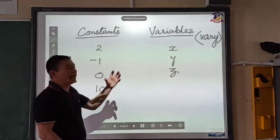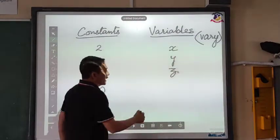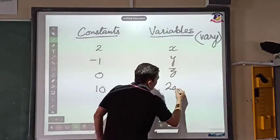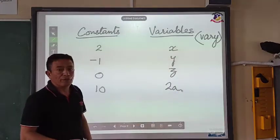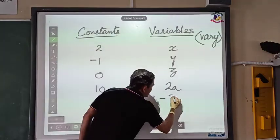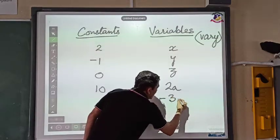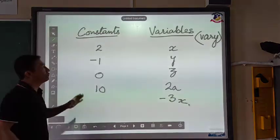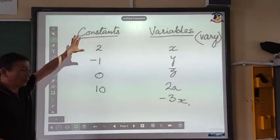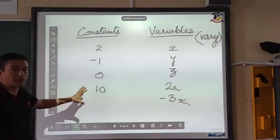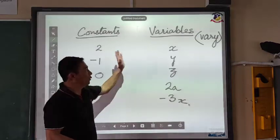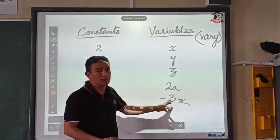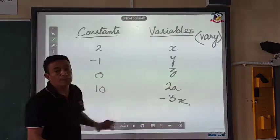When a number and an alphabet are mixed together — for example, 2a — it becomes a variable. Minus 3x is also a variable. So what we understand from constants and variables is: when only numbers are there, they are constants, and when alphabets are there along with numbers, they are all variables.